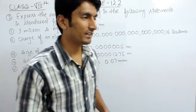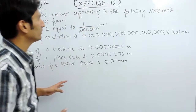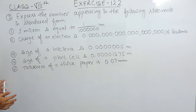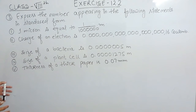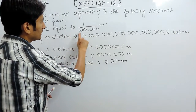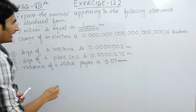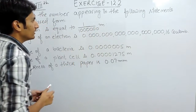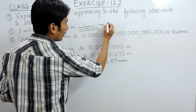Hello everyone. In this video we are going to solve question number 3 of exercise 12.2. In this question we have to express the numbers appearing in the following statements in standard form. The first part is: 1 micron equals 1 divided by this much meter, and we have to express this into standard form.